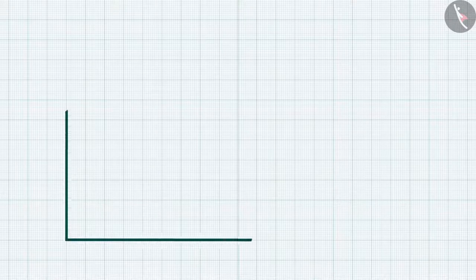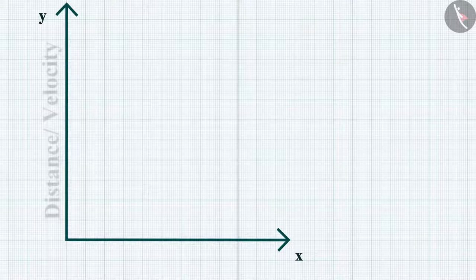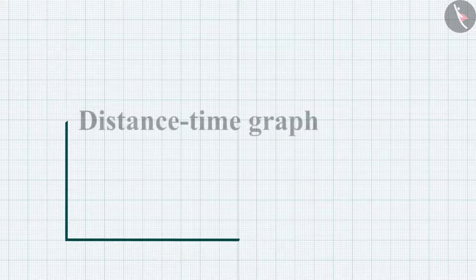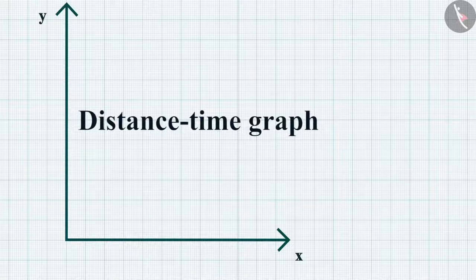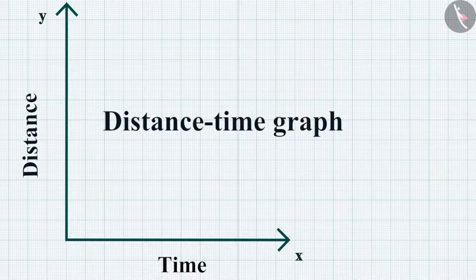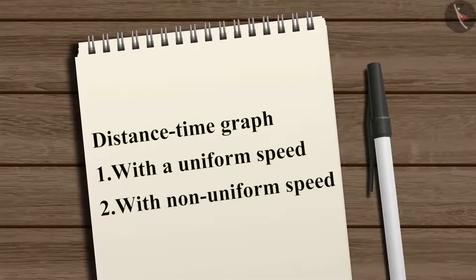In a line graph, we can represent one physical quantity like distance or velocity against another quantity such as time. Let's first discuss the distance-time graph, where time is along the x-axis and distance is along the y-axis. Distance-time graphs can be made for either uniform speed or non-uniform speed.